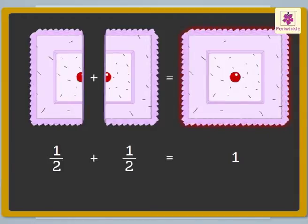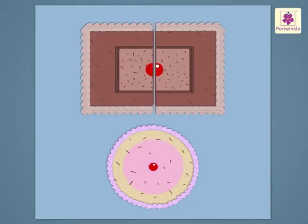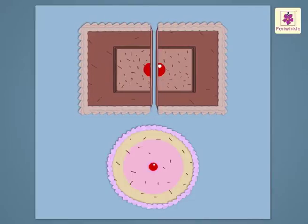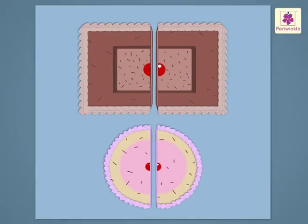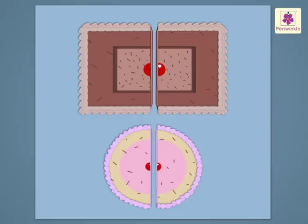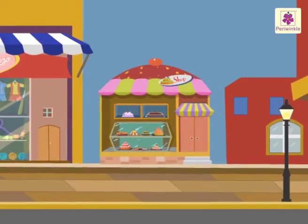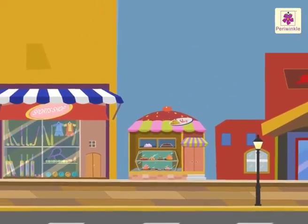Let us cut this rectangular cake and this round cake into two equal parts. Here, now we have two half parts of each cake. Wow, wasn't it easy?